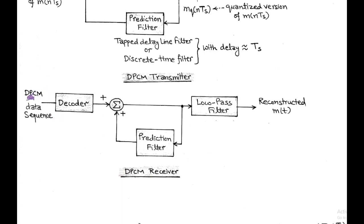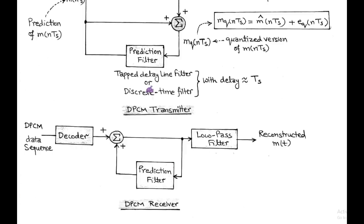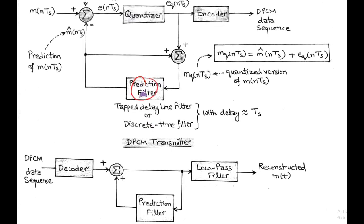The differential PCM receiver consists of a decoder, prediction filter, and low-pass filter. From the design point of view, the prediction filter at the transmitter and receiver side is the same.